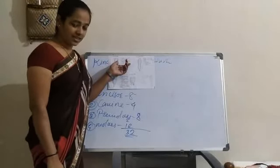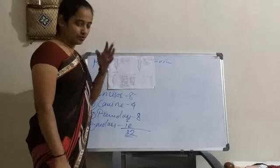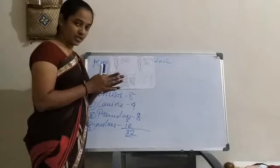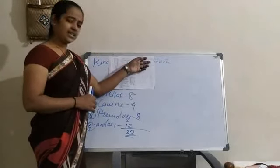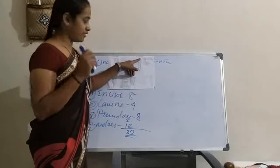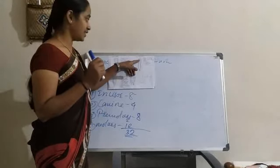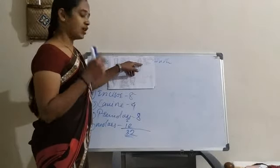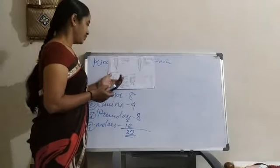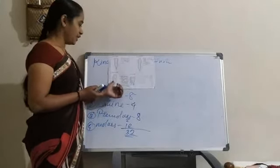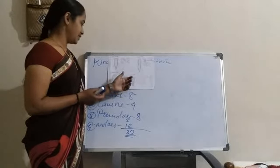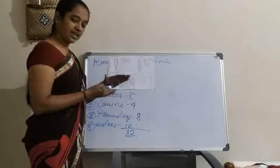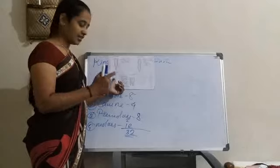Incisors are called cutting teeth as they are used to cut food. There are 8 incisors, 4 above and 4 below, having a flat surface and sharp edges for cutting. Canines have pointed teeth for tearing flesh or food properly, so these are called tearing teeth. There are 4 canines next to the incisors. Then premolars and molars — there are 8 premolars and 12 molars. These teeth are called grinding teeth as they have a wide and broad flat surface for grinding the food.